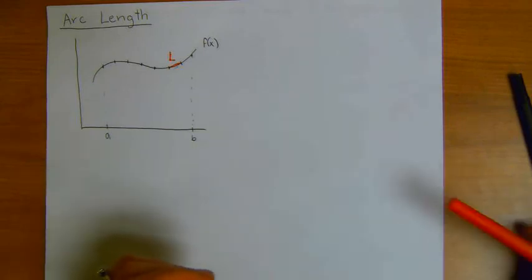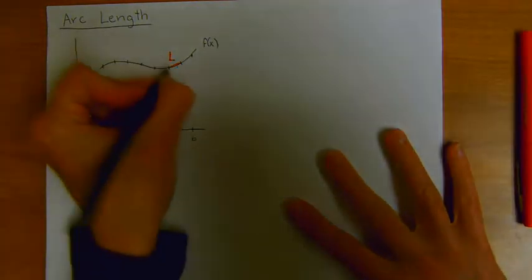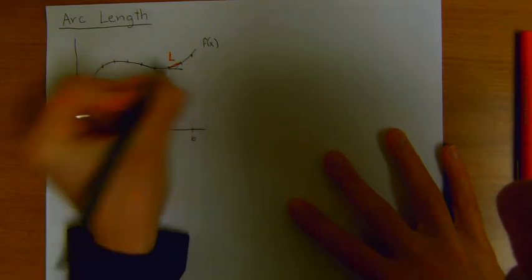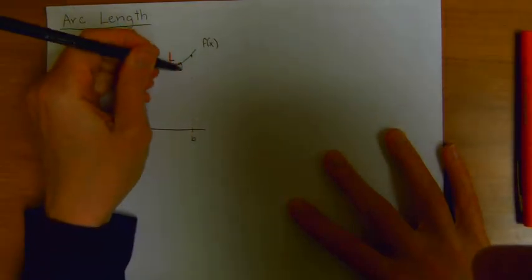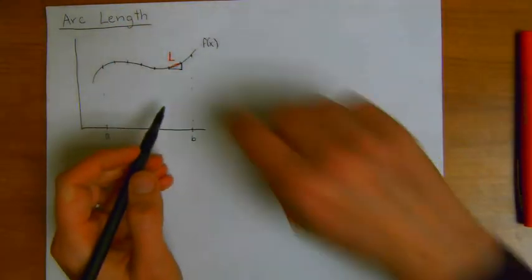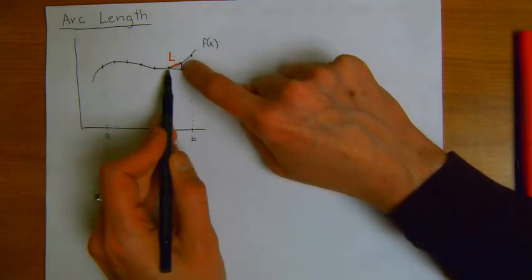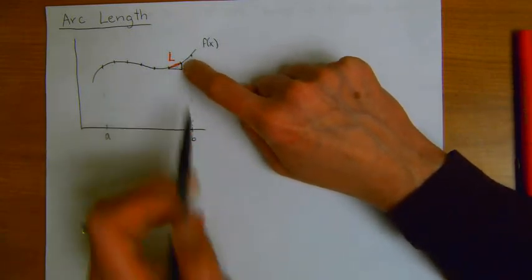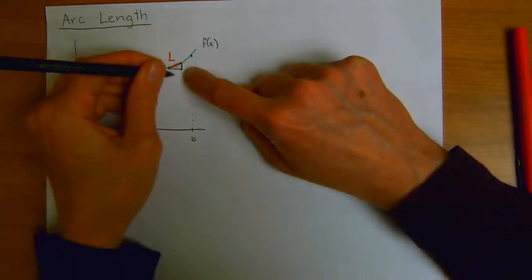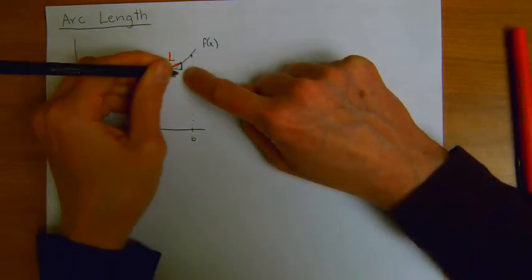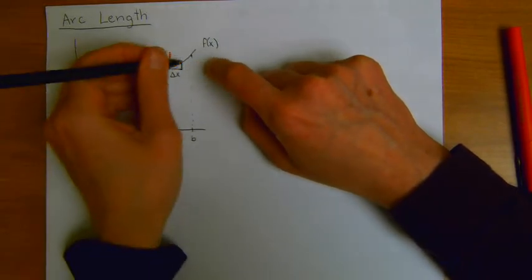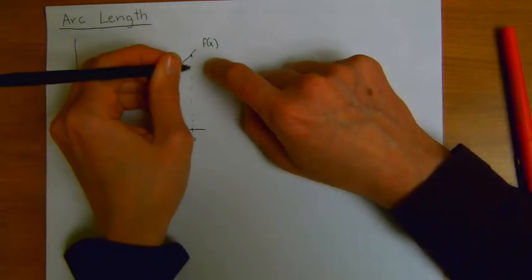And because it's a straight line, I'm going to make this L as actually a little triangular region. The length of this line segment L is the hypotenuse of the triangle with base given by delta x and height given by delta y.